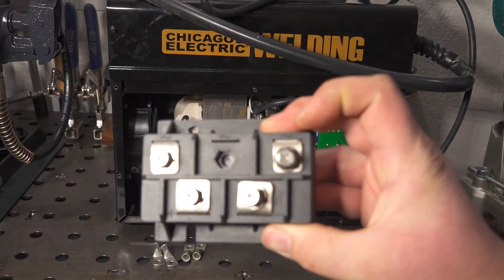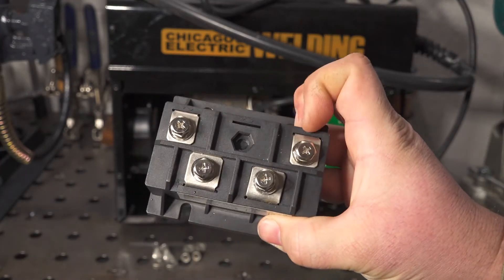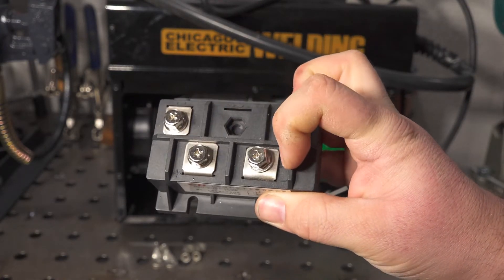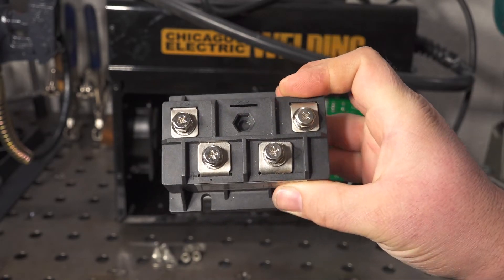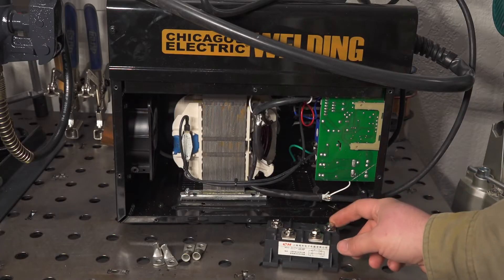On the rectifier you just have AC terminals on the one side and your DC output terminals on the other side and they are labeled negative and positive, and all you really have to do is put this in series with the output.